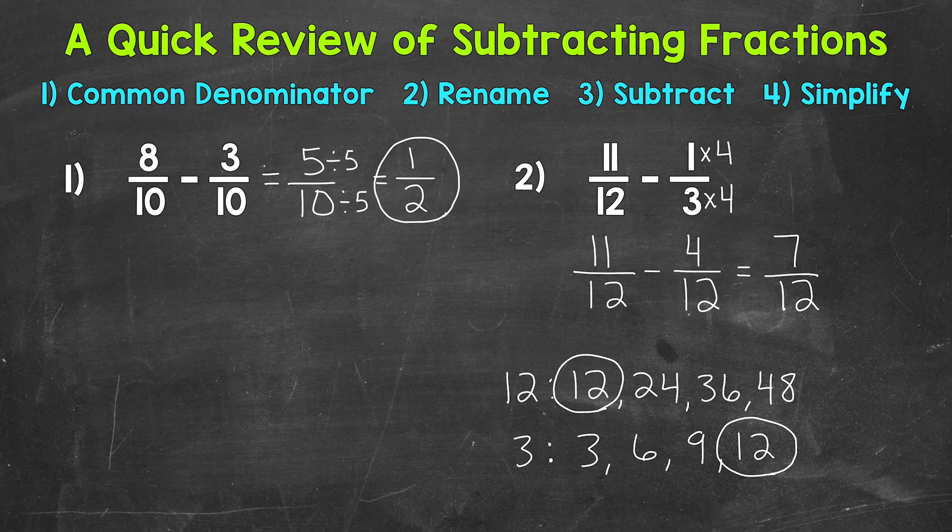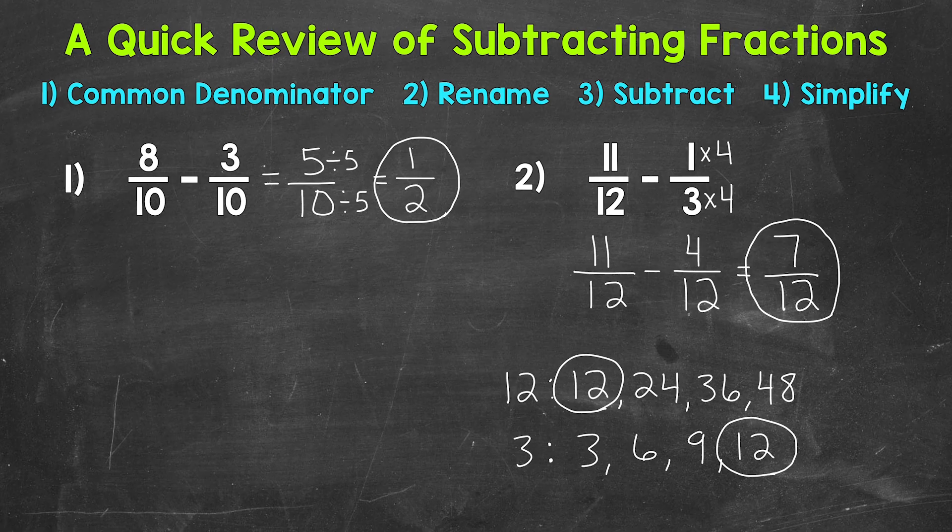7/12 is our final answer. Always look to see if we can simplify. The only common factor between 7 and 12 is 1, so this is in simplest form, and our final simplified answer is 7/12.